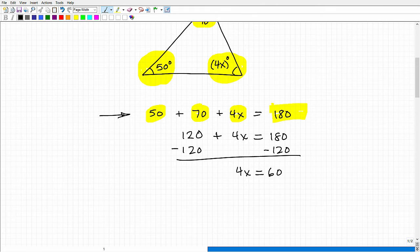And now, what do I do? Well, at this point, you want to go ahead and divide both sides of the equation by 4. So that's going to give me x is equal to 60 divided by 4, which is 15. So x is equal to 15.